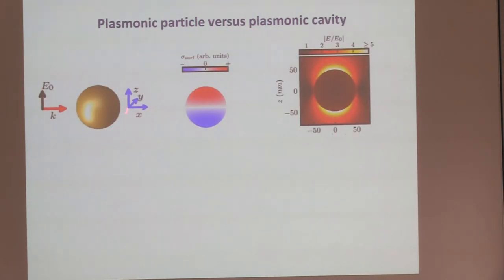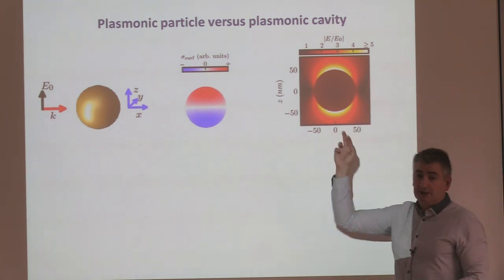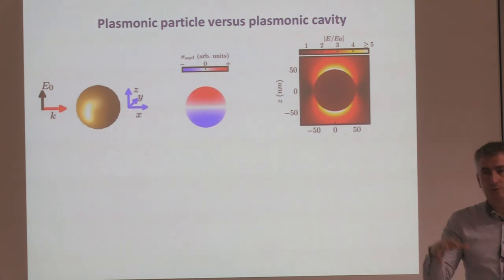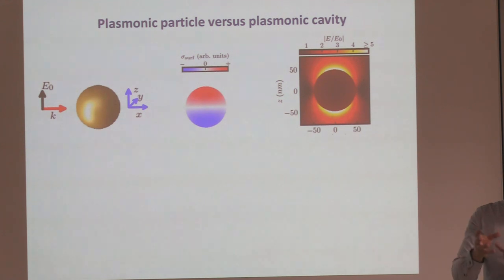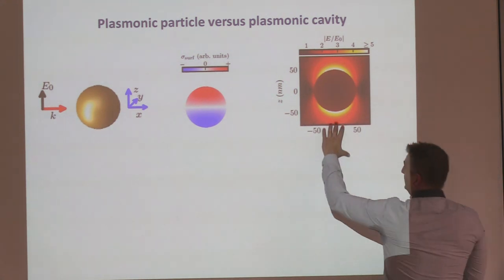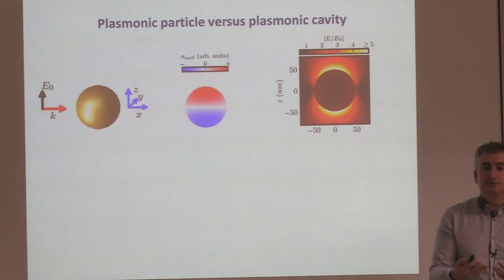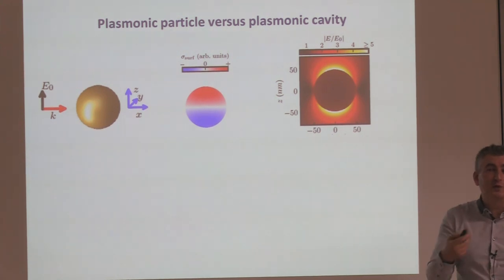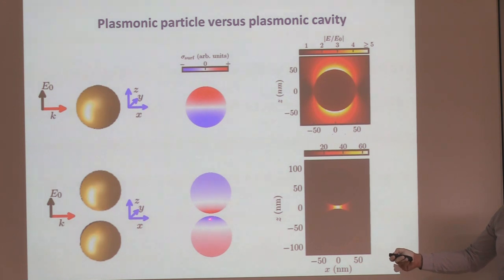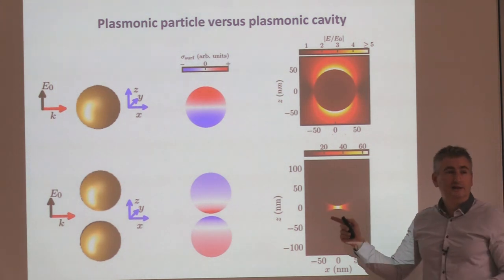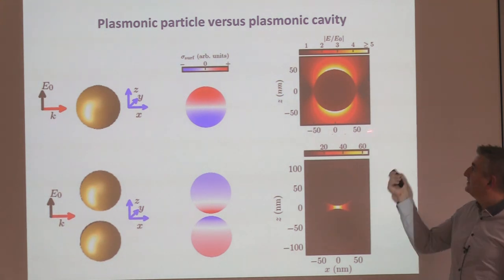Now it comes what is more interesting for this workshop. In plasmonics, since this is charge, and charge interacts very efficiently via Coulomb, we put another particle close to it. The resulting resonance is not just the sum of both — it's a hybridization via Coulomb interaction. Under the same illumination, you get positive-negative-positive-negative charge distribution with very large Coulomb interaction at very short distances, producing a big localization of the near field. Putting one particle close to another, you localize even further: this is the proper plasmonic nano-cavity.